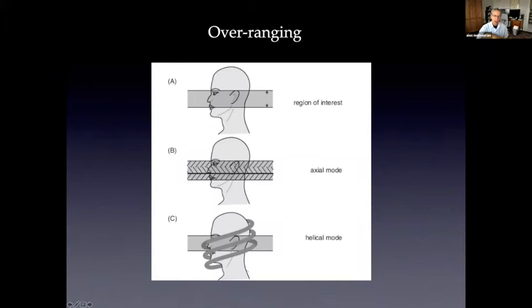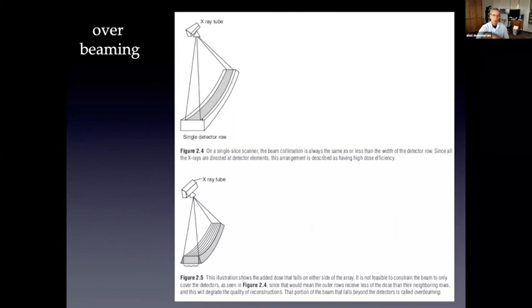So what is overranging? If this is the region of interest, if I want to cover that in axial mode, I cover exactly that volume in my trajectory of the beam. But if I'm going to go in helical mode, because of interpolation, the beam always has to start outside of the image volume and end outside of the image volume. And depending on the scanner and the detector array width, this may actually cover a lot of tissue that is outside of the region of interest. So this is adds to the inefficiency of multi detector scanner.